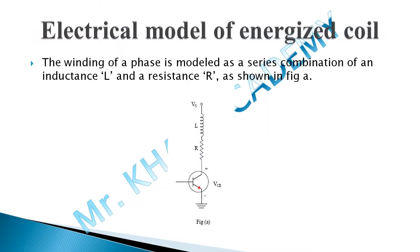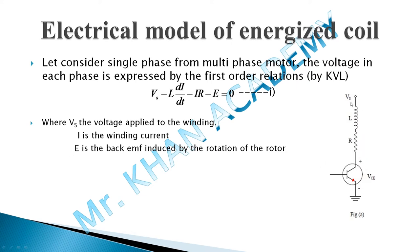If we consider a single phase of any motor, the winding of that phase is modeled as a series combination of an inductor and a resistor. In this single-phase diagram, a switching element — a transistor — is there along with the inductor and resistor connected in series. Suppose the supply voltage across this circuit is VS, current I is flowing across the winding, and E is the back EMF induced by the rotation of the rotor. Applying Kirchhoff's Voltage Law across the circuit gives the equation: VS − L(di/dt) − IR − E = 0.